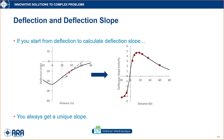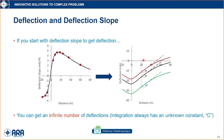These deflection slopes need to be integrated to give us the deflections we want, and there are some challenges with the integration process. If you start with a deflection and calculate the slope, the result is unique. But if you start from the deflection slope and try to get deflections, you can end up with an infinite number of deflections because of the integration constant C — as you may recall from calculus.